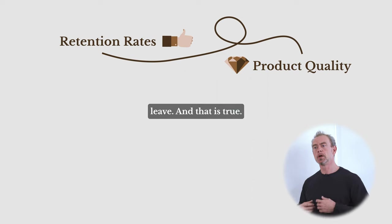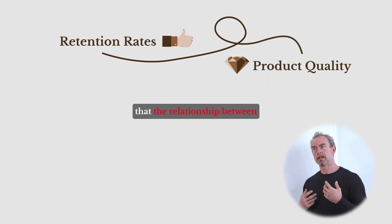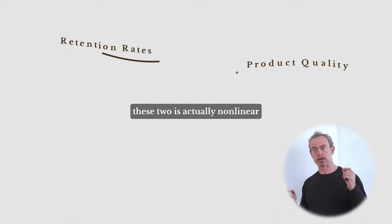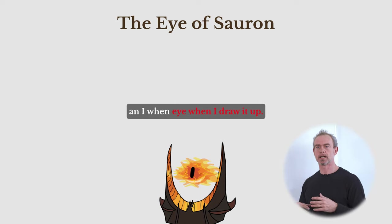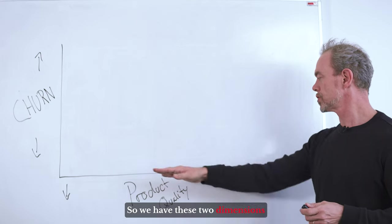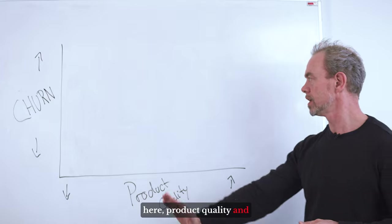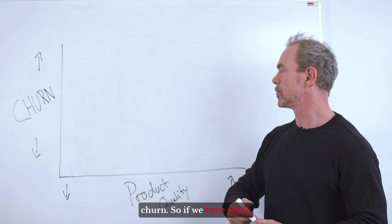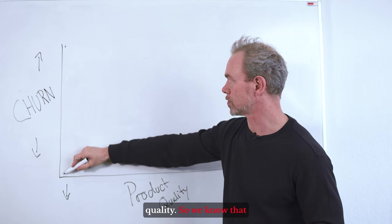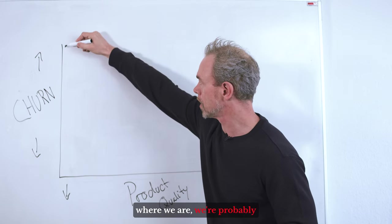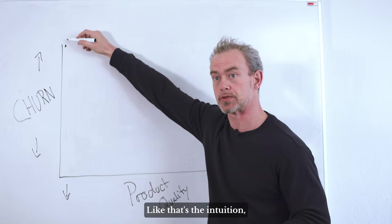And that is true, but they also found out that the relationship between these two is actually non-linear. And the model that came out of it is a model that I call the Eye of Sauron because it looks a little bit like an eye when I draw it up. So we have these two dimensions here, product quality and churn.